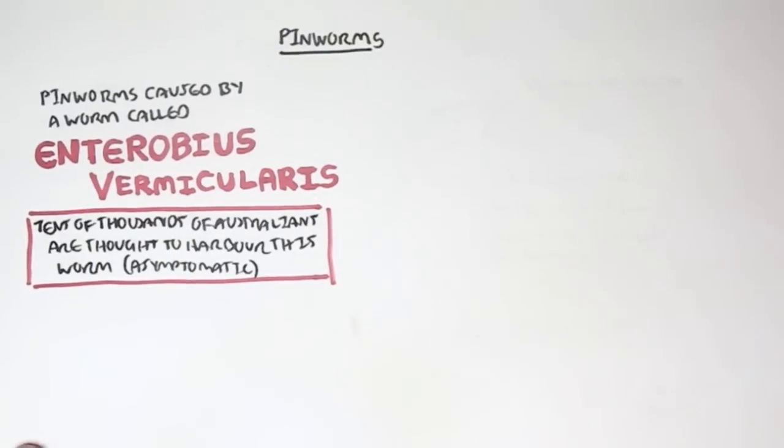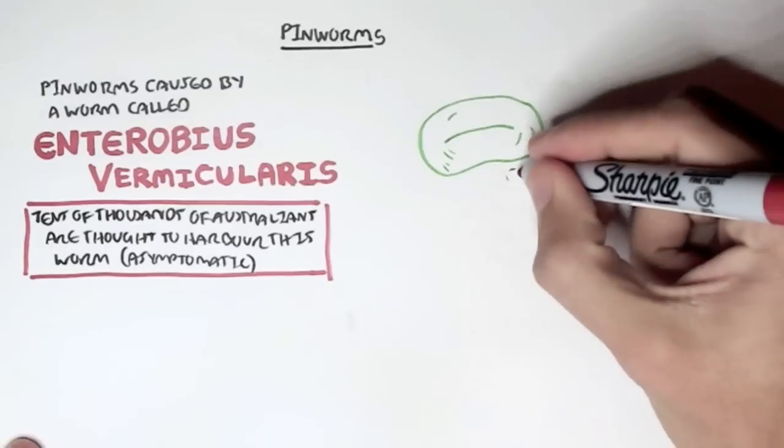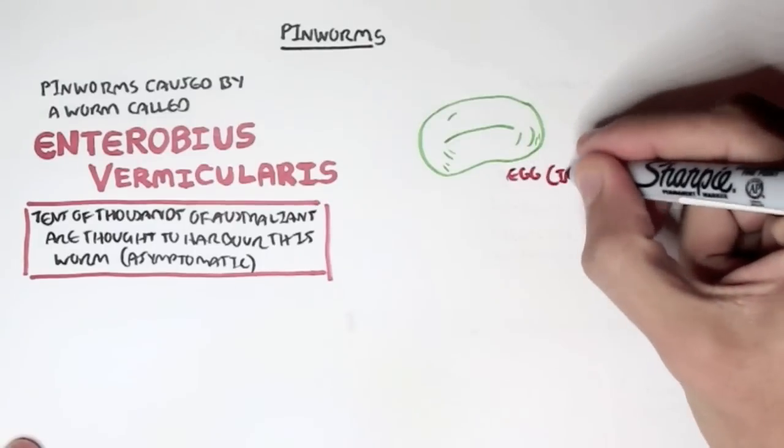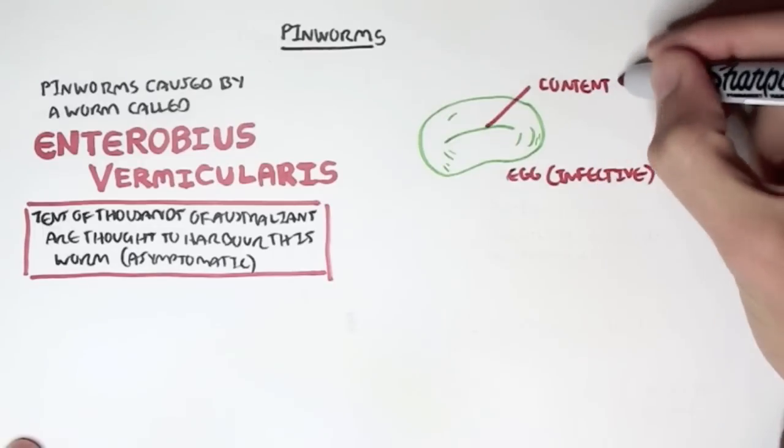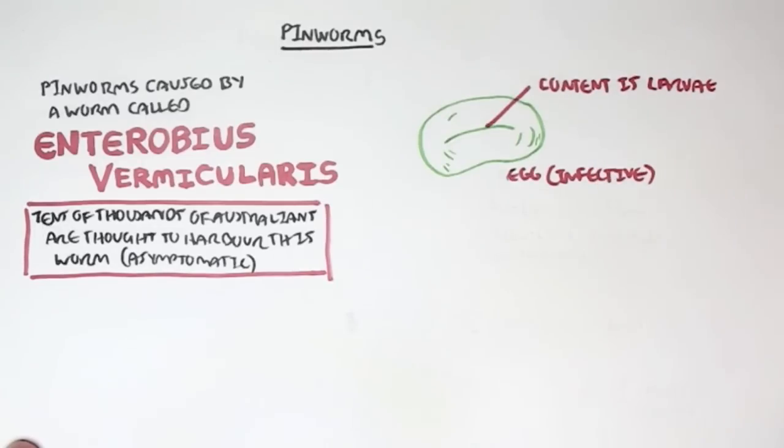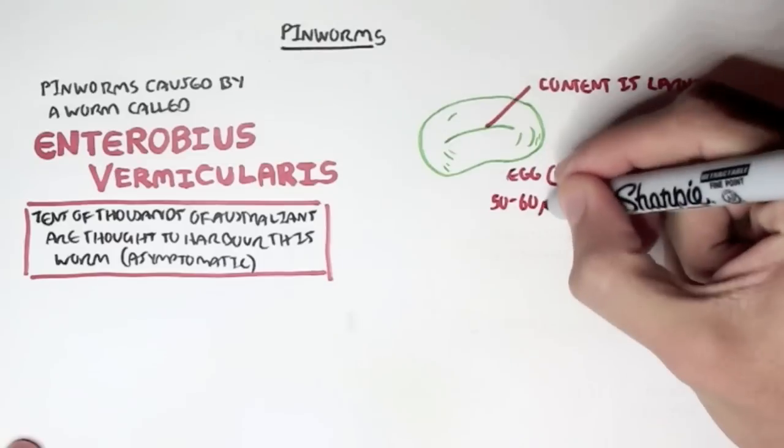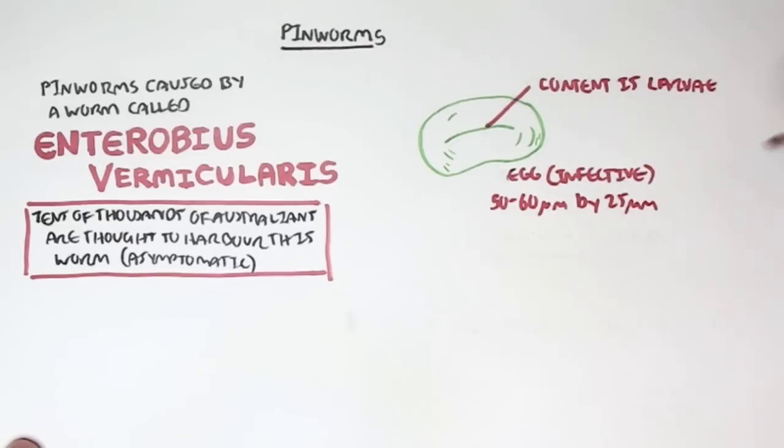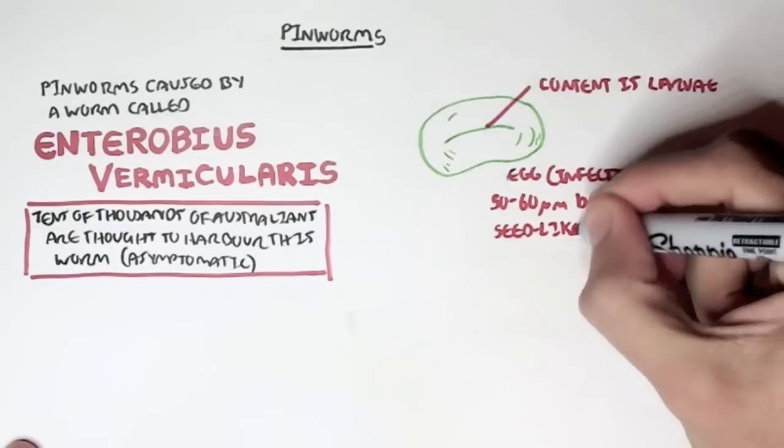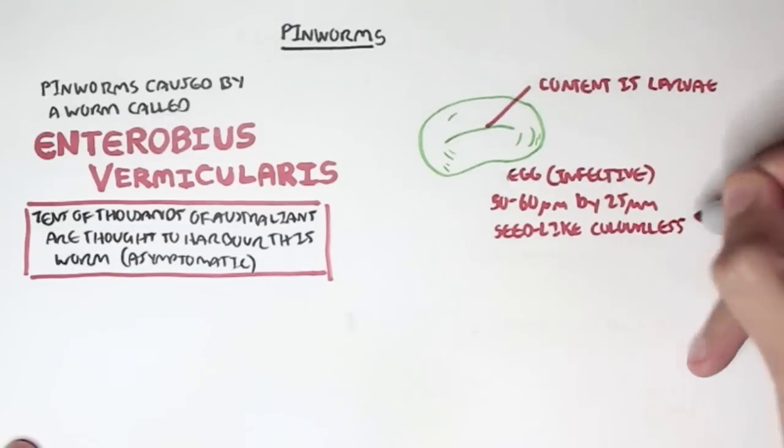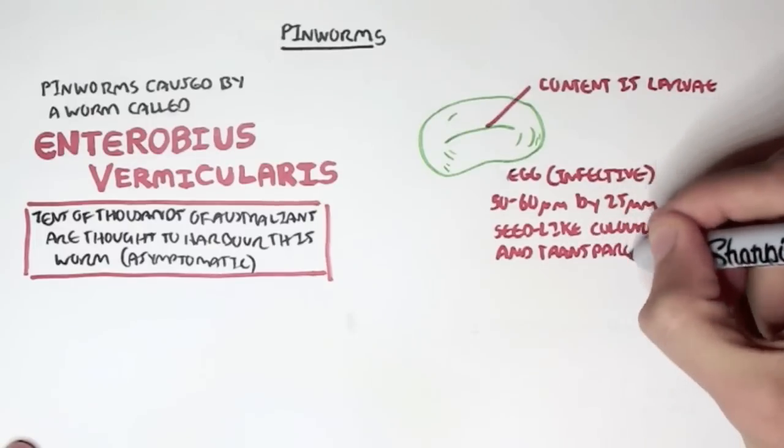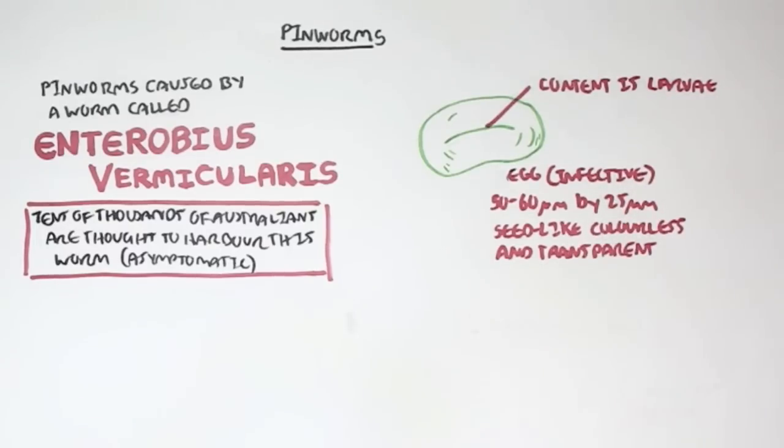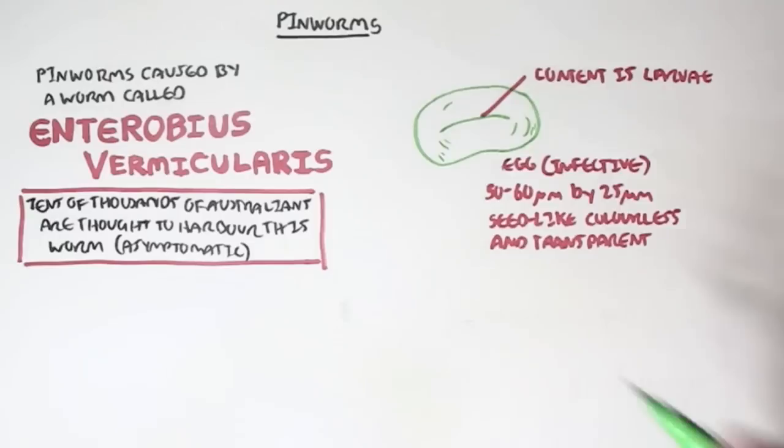This worm essentially comes from an egg. So here we have an egg. This is the infective form. Inside the egg, the egg contains larva. The egg itself is about 50 to 60 micrometers by 25 micrometers in width. It's a seed-like colorless shape and is transparent.